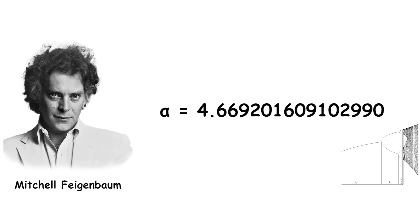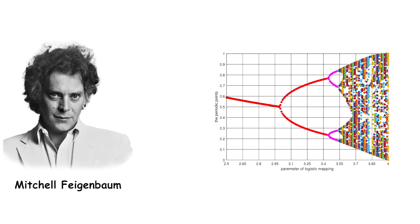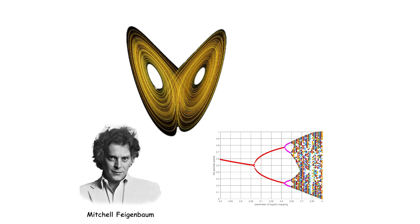The first Feigenbaum constant is a fundamental quantity that describes the universal behavior of certain types of non-linear systems, such as the logistic map, as they transition from stable periodic behavior to chaotic unpredictable behavior. It helps us understand the universal patterns and behaviors that emerge in complex, non-linear systems. It is a key concept in the study of chaos theory, which is the study of how small changes in initial conditions can lead to dramatically different outcomes over time.